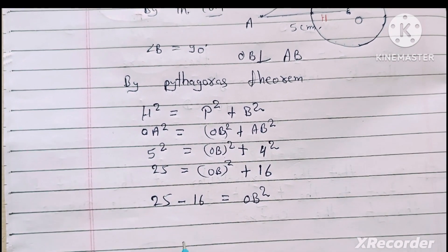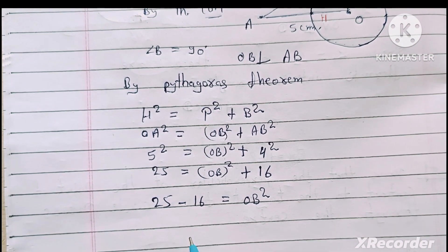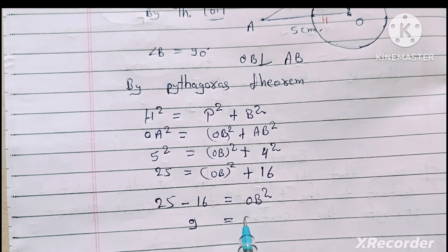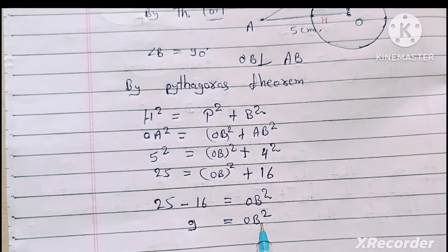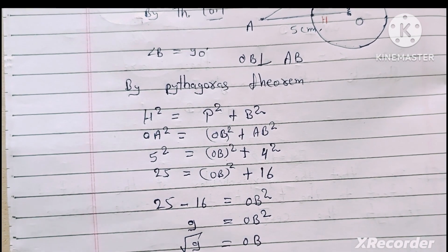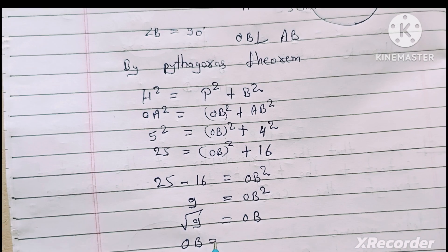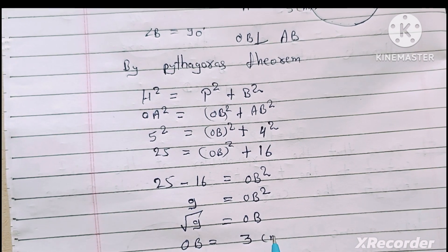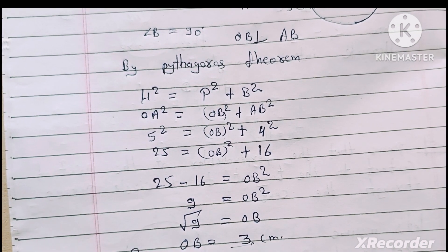25 me 16 minus karenge to aayega yahape 9 is equal to OB square. Ab yahape jo square hai wo yahape aajayega as root. To OB ki value ho jayegi yahape 3 cm. To yeh apni radius aa gayi.